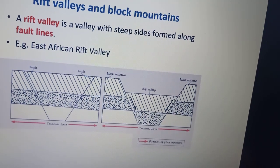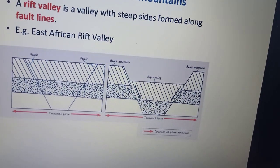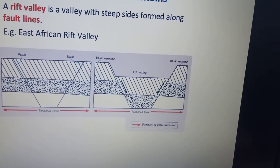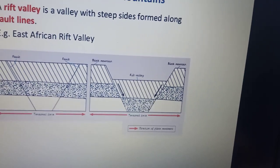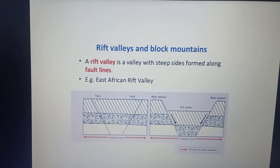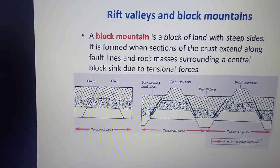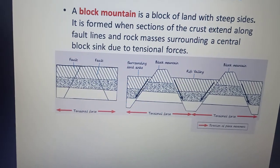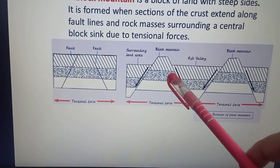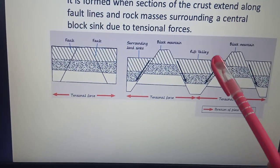The block mountains have flattened summits and are also referred to as the horst mountains. These block mountains are separated from each other by the rift valley.